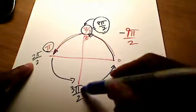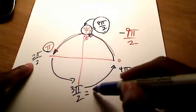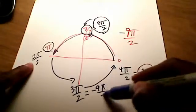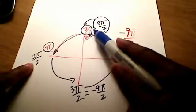4π, 5π, 6π, 7π, 8π, 9π. So negative 9π over 2 is really the same thing as saying negative π over 2.